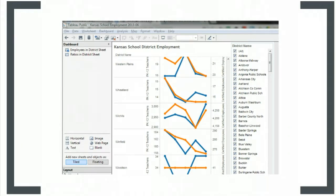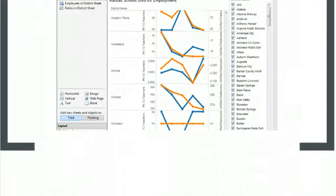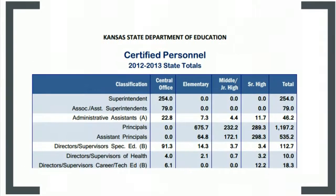The data we're looking at is for certified personnel, and this is divided into two groups. There are teachers and then others. Besides teachers, certified personnel includes superintendents, principals, librarians, and nurses, for example.